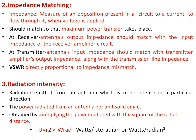The next characteristic is radiation intensity. We know that the antenna plays the role to radiate the signal or power — the intensity of its radiation is called the radiation intensity of that particular antenna. The radiation intensity of an antenna should be high in a desired direction. It is the power radiated from an antenna per unit solid angle, obtained by multiplying the power radiated with the square of the radial distance. Mathematically it is R² × W_rad, where W is the power radiated, and the unit is watts per steradian.